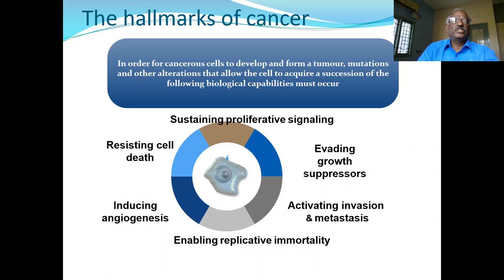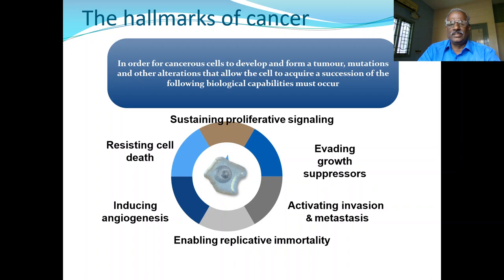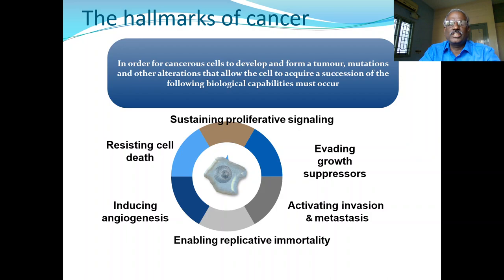I am going to give an example of drug discovery based on pathophysiology, taking cancer as a model. There are six possible pathophysiologies of cancer: sustaining proliferative signaling, evading growth suppressors, activating invasion and metastasis, enabling replicative immortality, inducing angiogenesis, and resisting cell death. These are six ways by which cancer can occur in our body. I will discuss them one by one.